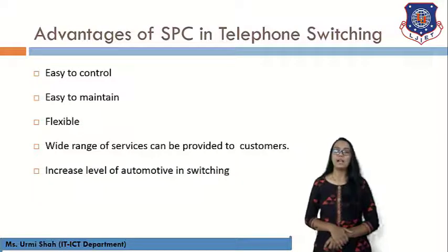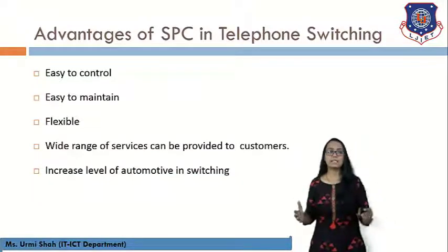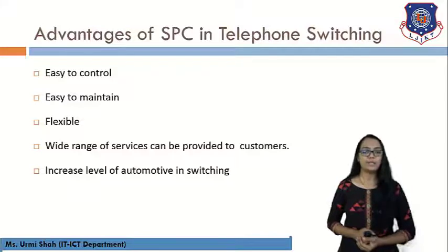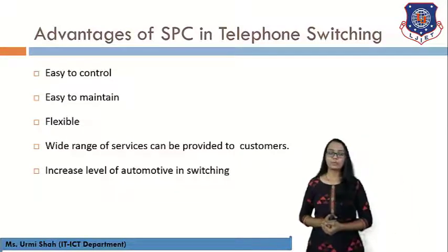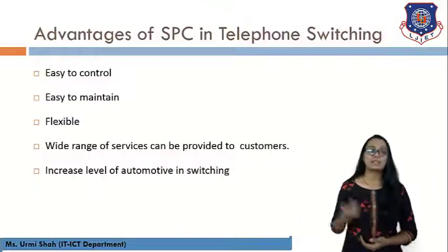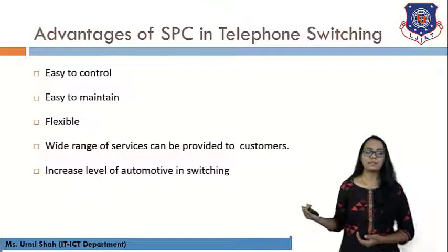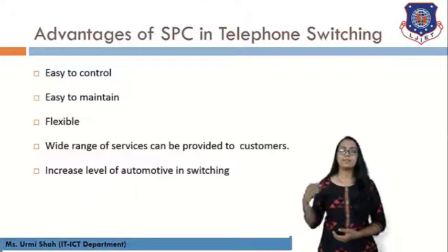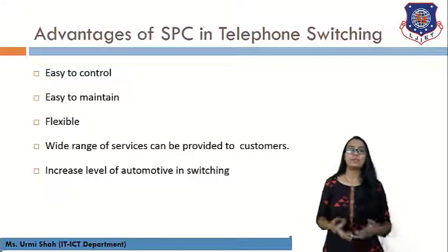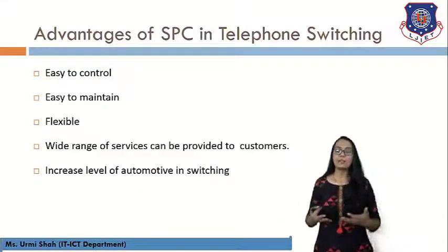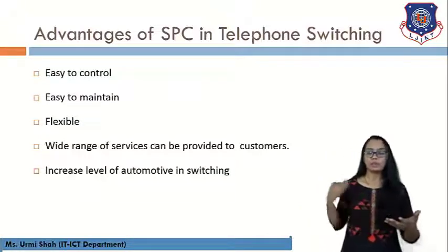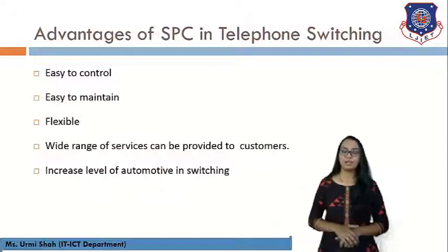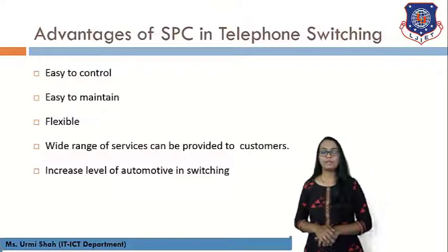In this session we have seen the classifications of switching systems. In electromechanical systems we have two types: stored program control and electronic switching. Within SPC we have two types — distributed and centralized SPC — differentiated by the number of processors accommodated and the different modes incorporated in each.